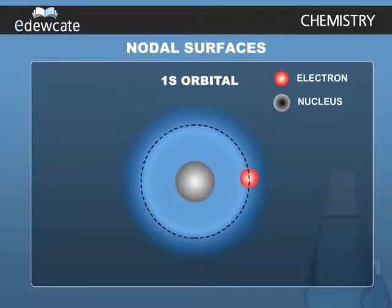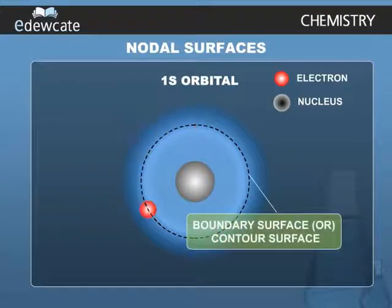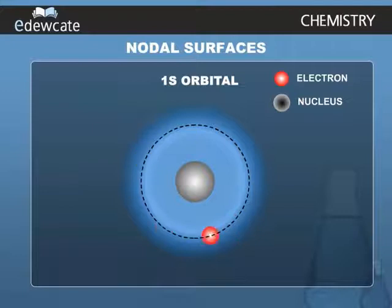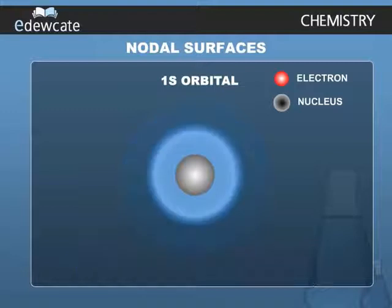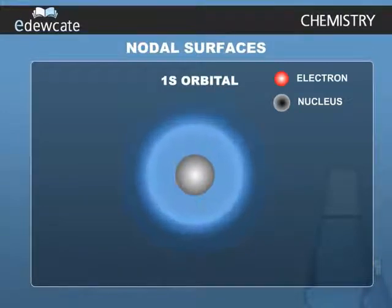In this representation, a boundary surface or contour surface is drawn in space for an orbital on which the value of the probability density is constant. In principle, many such boundary surfaces may be possible.